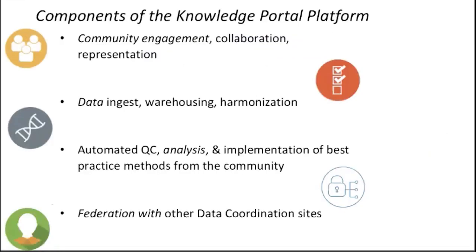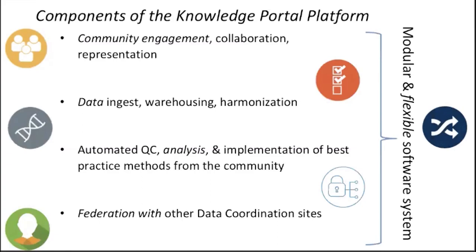What are the core elements of the portal? There are really five. The first is community — experts who care about a specific disease or phenotype. The second is data — you need lots of it and a warehouse to bring it together. The third is analysis and the best practices of the community. The fourth is federation. And the fifth, which got cut off due to a Mac-to-PC conversion issue, is representation and knowledge delivery. All of this needs to be put together in a flexible and modular software system.